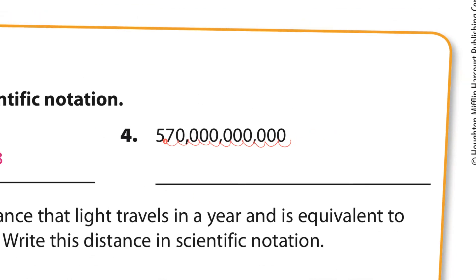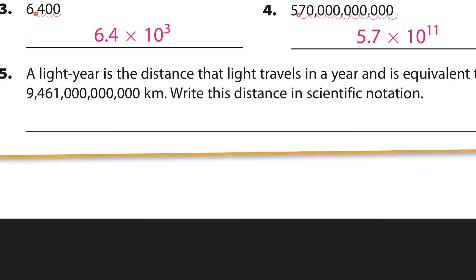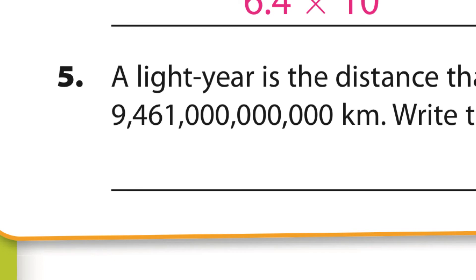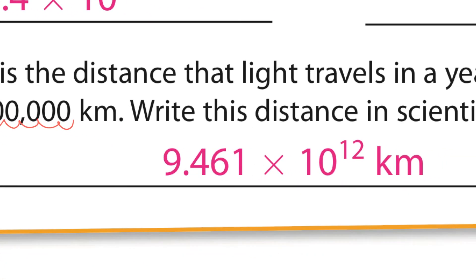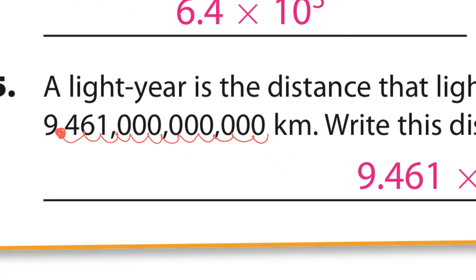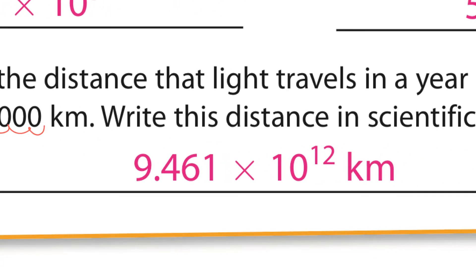And then the last one: place the decimal right there and count 1, 2, 3, 4, 5, 6, 7, 8, 9, 10, 11, 12 — so 12 times we moved the decimal. The answer is 9.461 times 10 to the 12th.